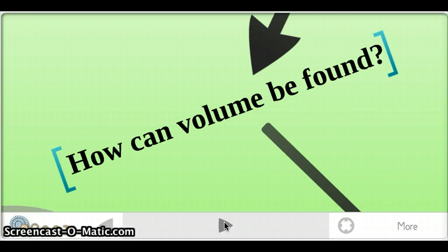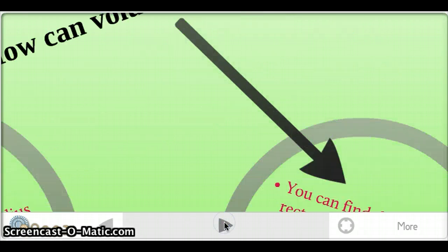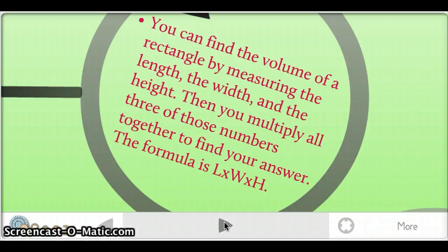How can volume be found? You can find the volume of a rectangle by measuring the length, the width, and the height. Then you multiply all three of those numbers together and find your answer.